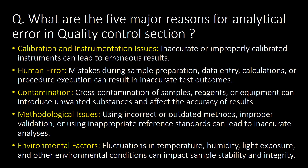What are the five major reasons for analytical error in the quality control section? First is calibration and instrumentation issues — inaccurate or improperly calibrated instruments can lead to erroneous results. Second is human error — mistakes during sample preparation, data entry, calculations, or procedure execution. Third is contamination. Fourth is methodological issues. Fifth is environmental factors — fluctuations in temperature, humidity, and light exposure can impact sample stability and integrity.